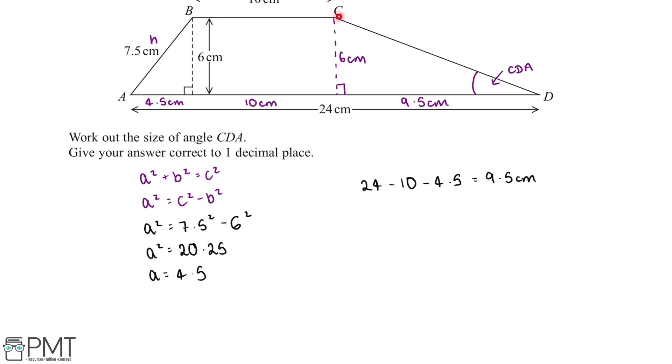So now what we can see on this triangle on the right, we have two lengths which means we can work out one of the angles by using trigonometry. So we want to work out the angle of CDA. So we can label up these sides.